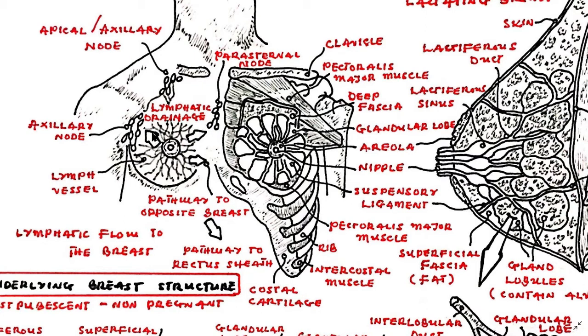The most common channel of spread is to the axillary lymph nodes followed by the apical nodes and the parasternal nodes, which are located alongside the sternum.